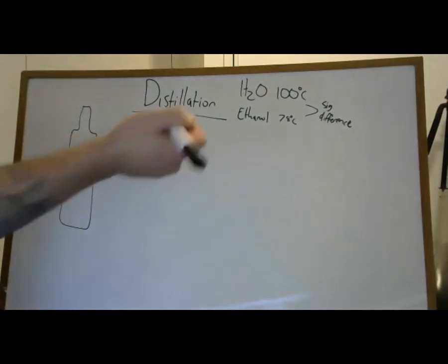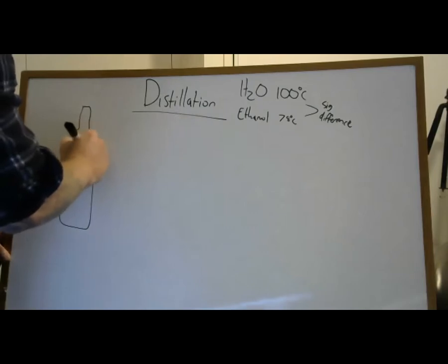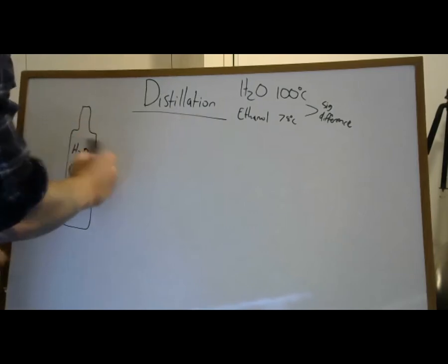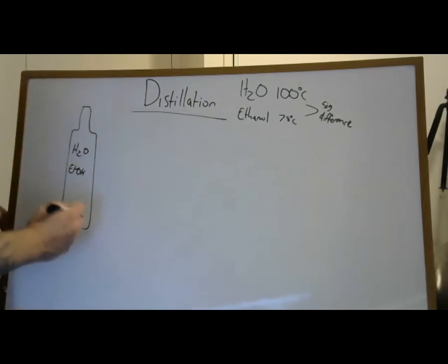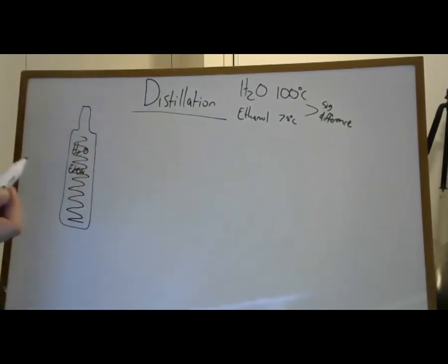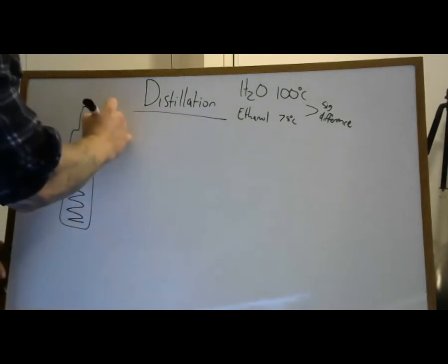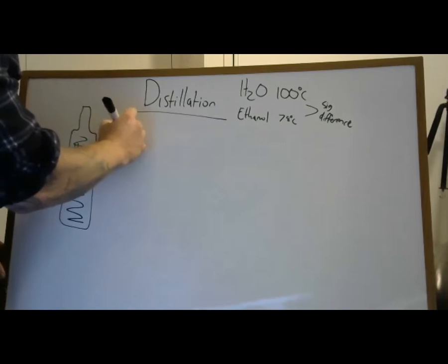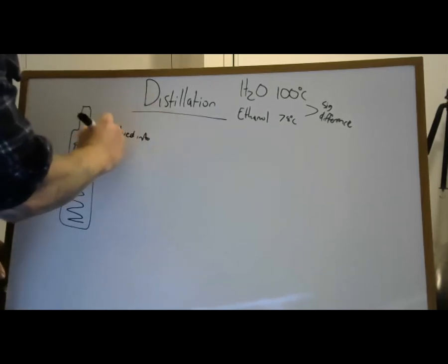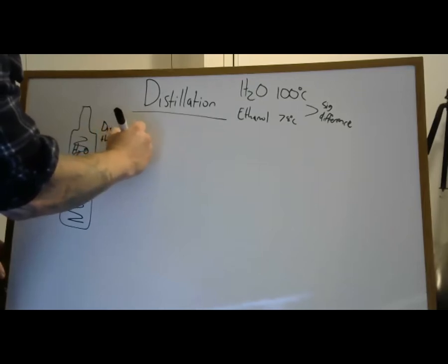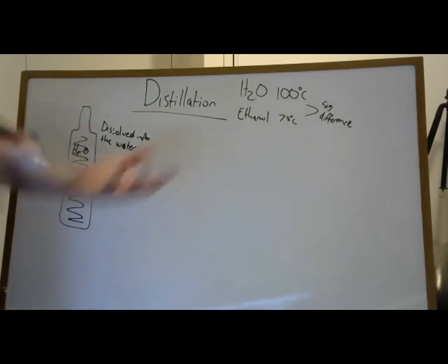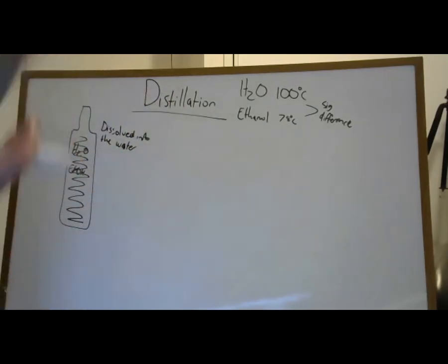So we have H₂O and ethanol in a suspension with a uniform distribution of the two. I can't just let them settle and have the alcohol separate out — the alcohol has dissolved into the water. We can't just filter it to get it out.